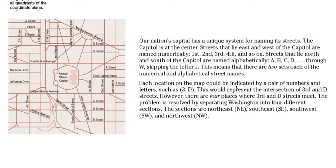Each location on the map could be indicated by a pair of numbers and letters, such as 3D in parentheses. This would represent the intersection of 3rd and D streets. However, there are four places where 3rd and D streets meet, and you can see two of them on this map — 3rd and D street right here, and another one right there.